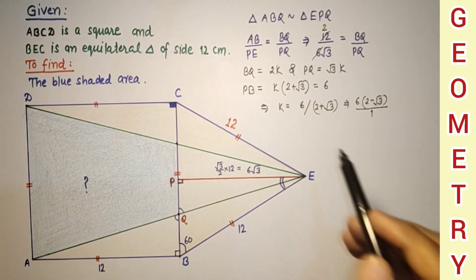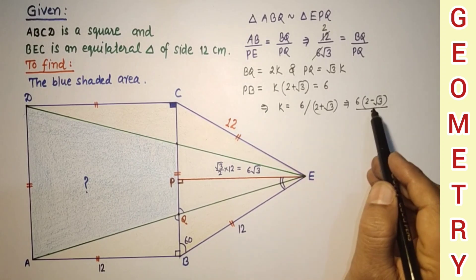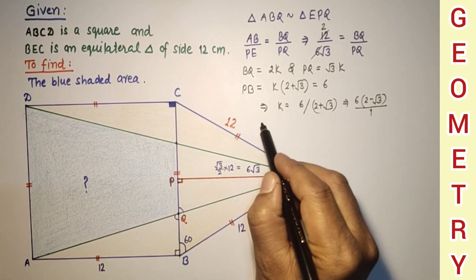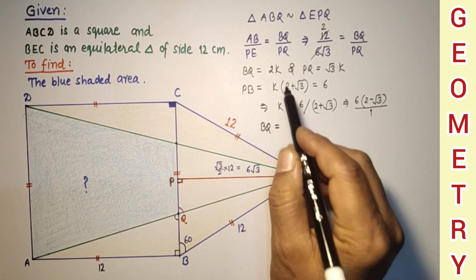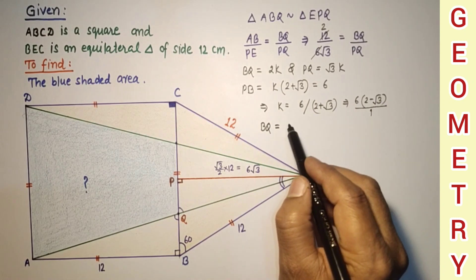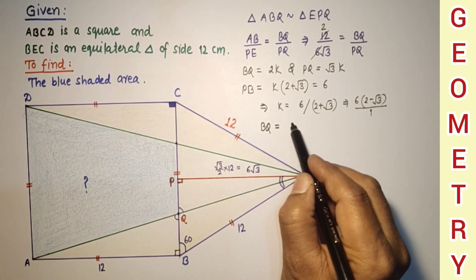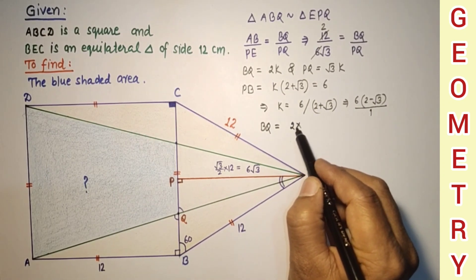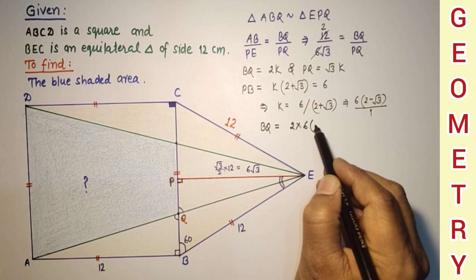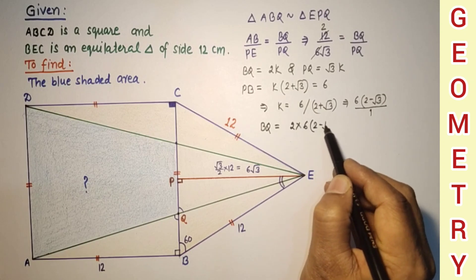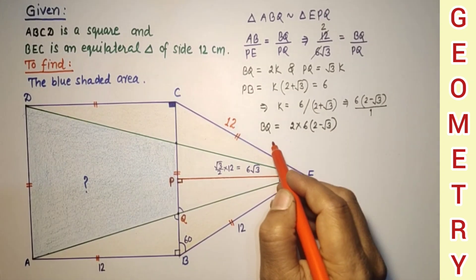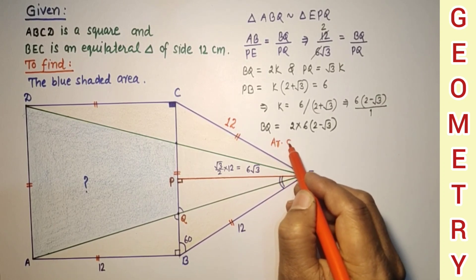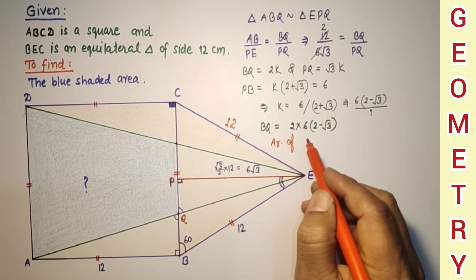This is the value of K, so BQ equals 2K, which equals 2 times 6 times (2 minus root 3), giving BQ equals 12(2 minus root 3). Therefore we can now find the area of triangle ABQ.